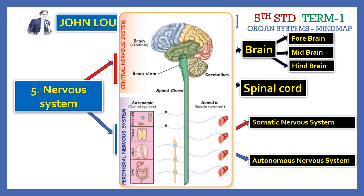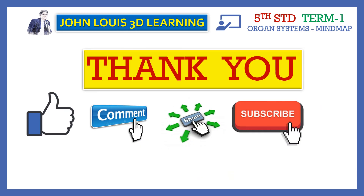So the peripheral nervous system covers these topics. These are the five different systems we need to learn thoroughly. If you like this video, please click the thumbs up, comment, share, and without fail subscribe to my channel, John Lewis 3D Learning. Thank you very much for watching — until we meet next time, bye bye.